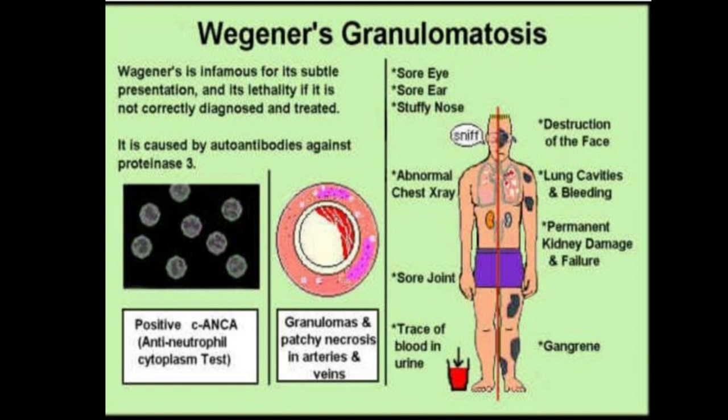GPA is caused by antibodies against proteinase 3 (PR3) and is c-ANCA positive. When you do immunofluorescence you will see a cytoplasmic pattern, but the antibody which is seen is against PR3. You can have ENT involvement, lung involvement, and renal involvement as mentioned. Keep all these things in mind — it is always good to have these diagnoses in mind.